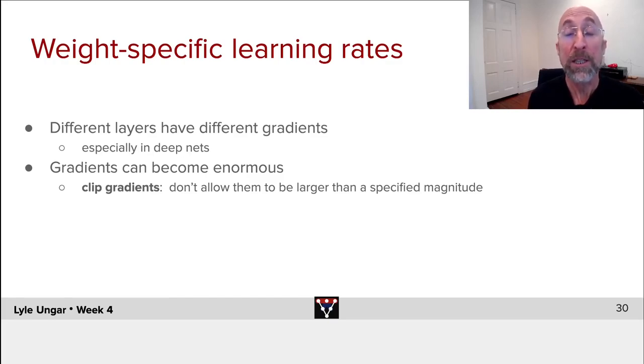All of the sophisticated deep learning gradient descent methods use that and mini-batch, but they also use methods that adjust the learning rate for every single weight separately. There's a bunch of reasons for that, and we'll get to those in a second.